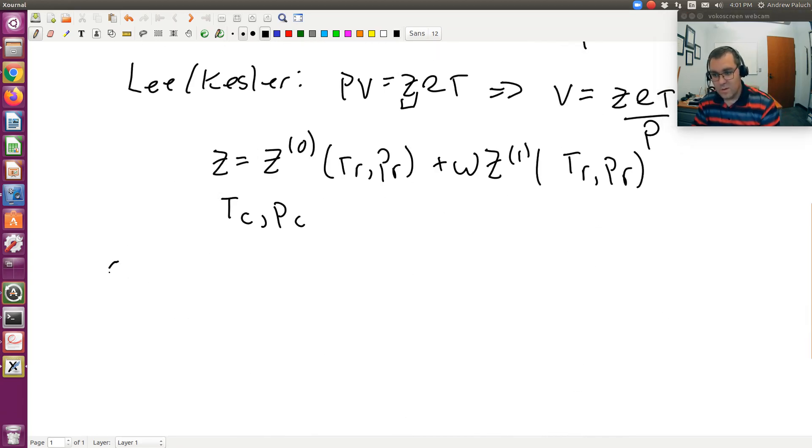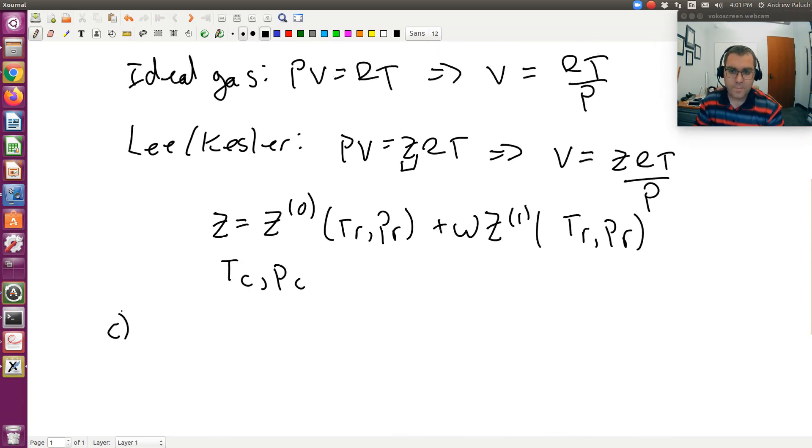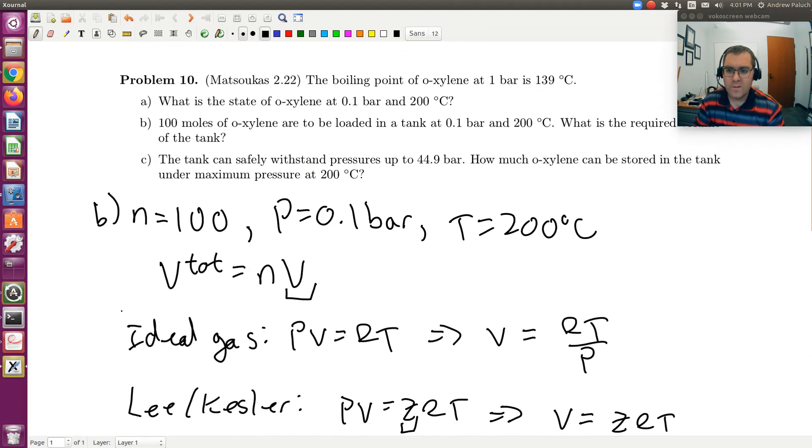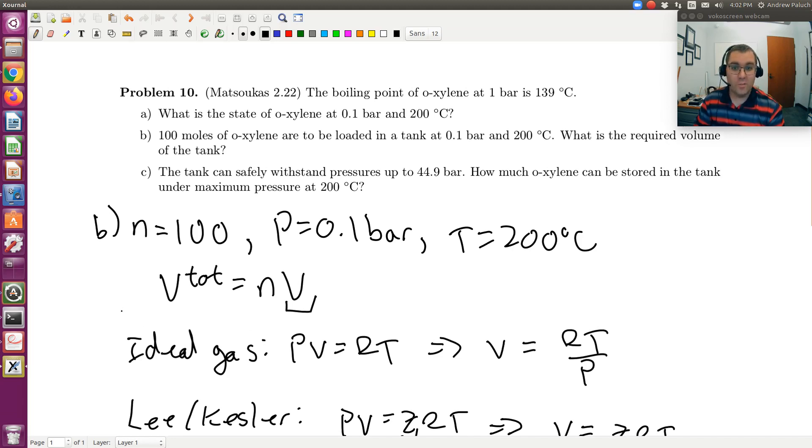Last, C. So what is C asking? C wants to know, or it tells us, the tank can safely withstand pressures up to 44.9 bars, how much O-xylene can be stored in the tank under maximum pressure at 200 degrees C. So how I would interpret this is in B, we just calculated V total, so I know the total volume of my tank. Now in C, temperature is still going to be 200 degrees C, maximum pressure is 44.9 bars. Under this maximum pressure, how many moles can I hold?